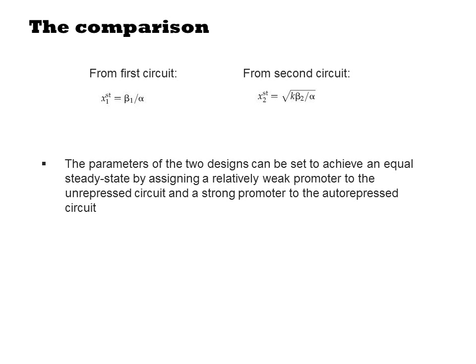If we assume the same promoter and strain for both circuits, the values of beta and alpha will be the same to a first approximation, and the second circuit will plateau at a lower X concentration than the open one. Experimentally, the two circuits could be rebalanced by changing the minus 35 and minus 10 sequence of the open circuit. By putting in a weaker promoter, a lower value of beta is achieved, and the two circuits will reach similar steady state concentrations.